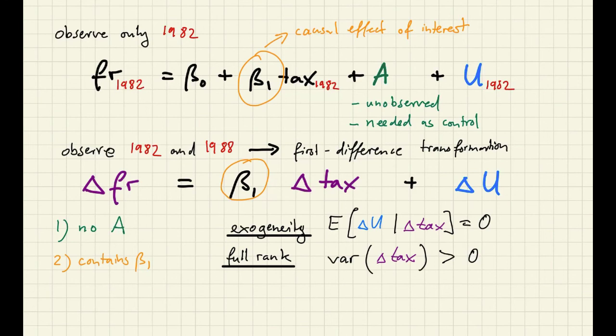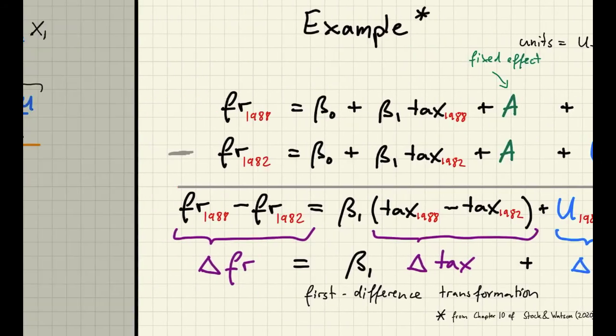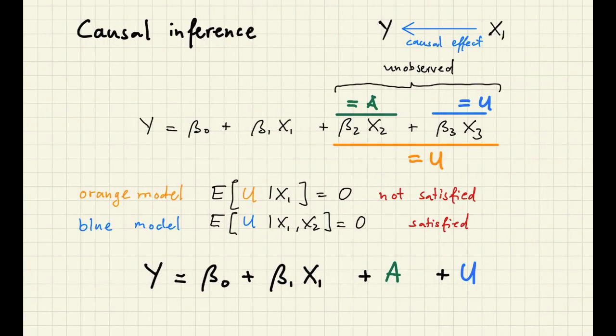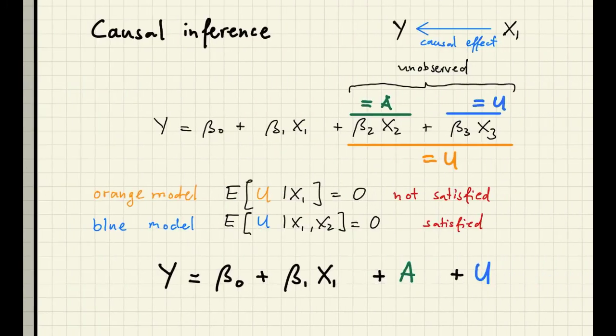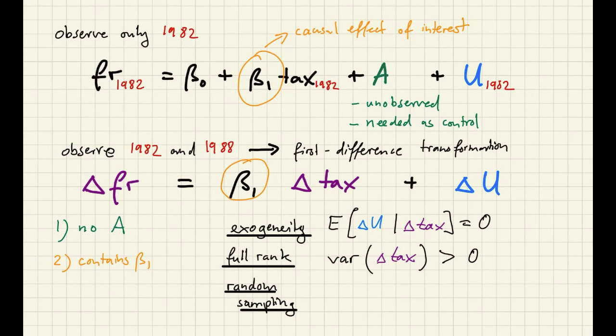Next, let's check the random sampling assumption. We observe this model once for every cross-sectional unit, and we have assumed that cross-sectional units are independent. Therefore, random sampling holds.